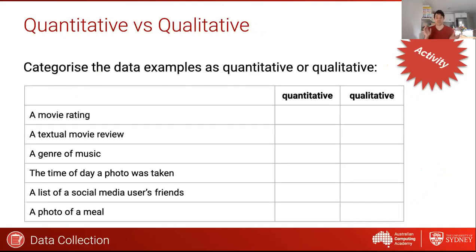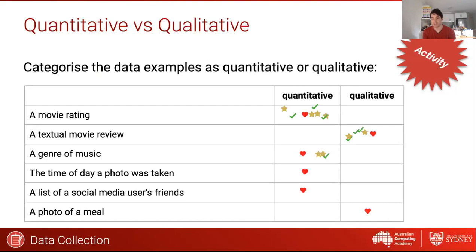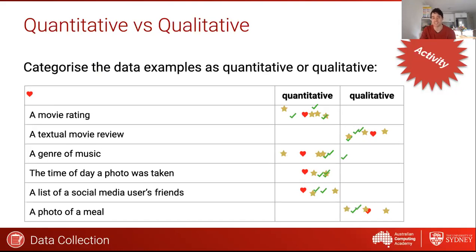We've got a bunch of qualitative and quantitative types of data. What I'd like you to do is put a stamp in the one you think is correct. Do you think a movie rating is quantitative or qualitative? A textual movie review? Genre of music? The time of day a photo was taken? A list of social media friends? Photo of a meal? It looks like everybody's pretty much in the same state of mind for all of these — but feel free to put a stamp in the other side if you think everyone else is wrong. Stand out from the crowd.